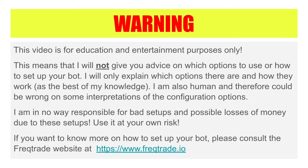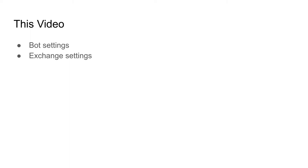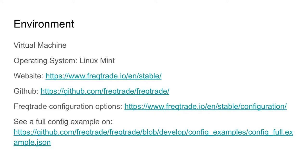In this video I will start with the multiple generic settings that you can use to configure your bot, and after that I'll end with the parameters you can set to configure your exchange. This video is a follow-up on my previous video where I gave an introduction to the configuration file of FreqTrade. I'm using a Linux virtual machine with Mint as my distribution. If you want more information about the configuration options, I recommend visiting the FreqTrade website, especially the configuration page.